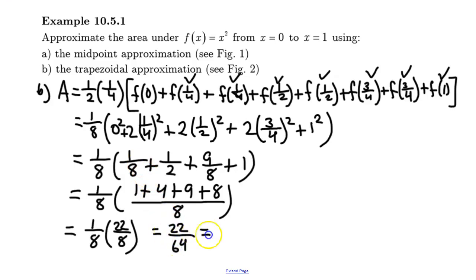Can we simplify this? 11 over 32. 11 over 32, which is approximately 0.344.